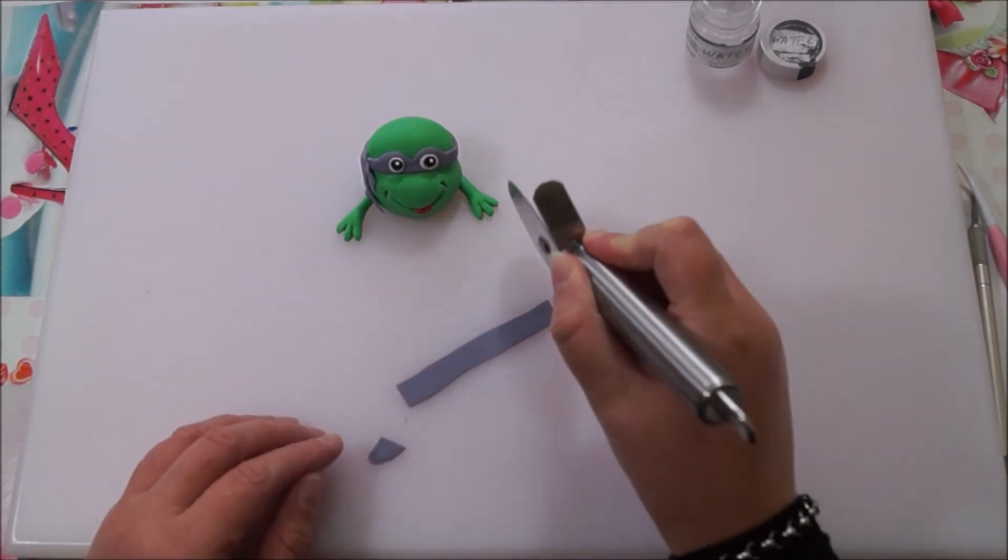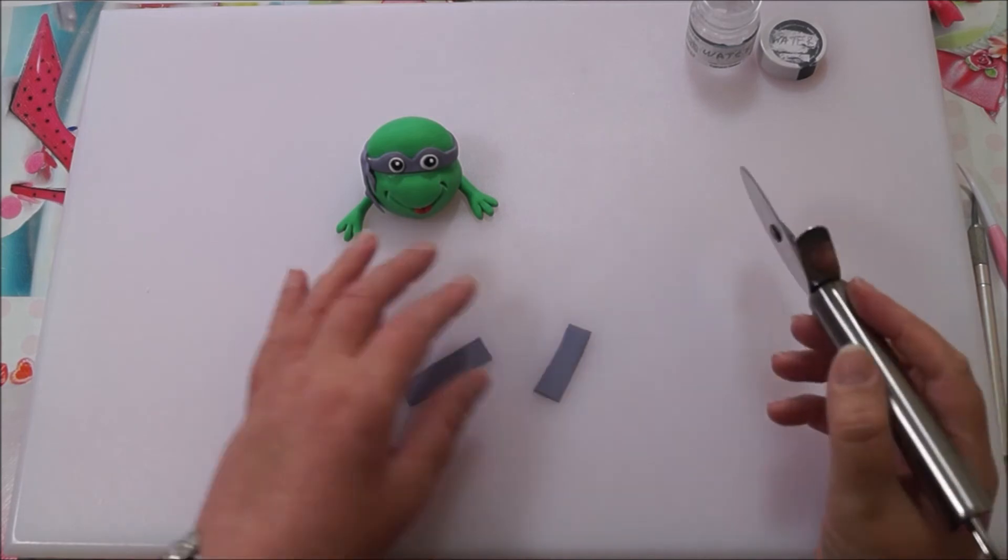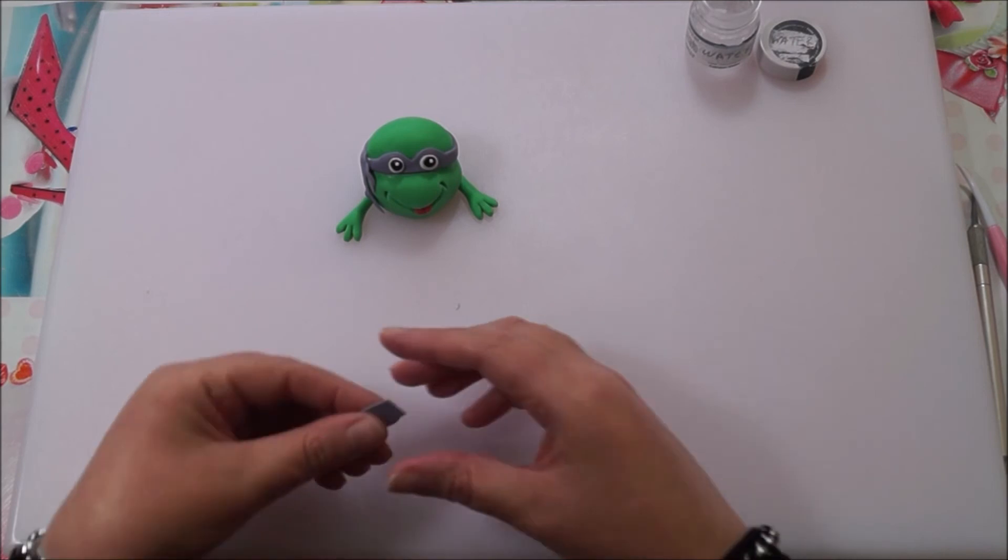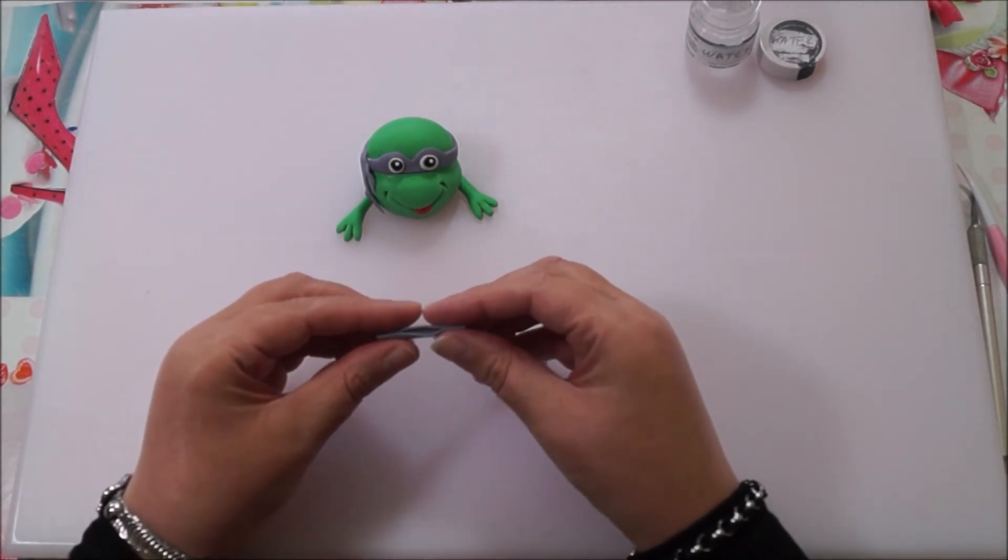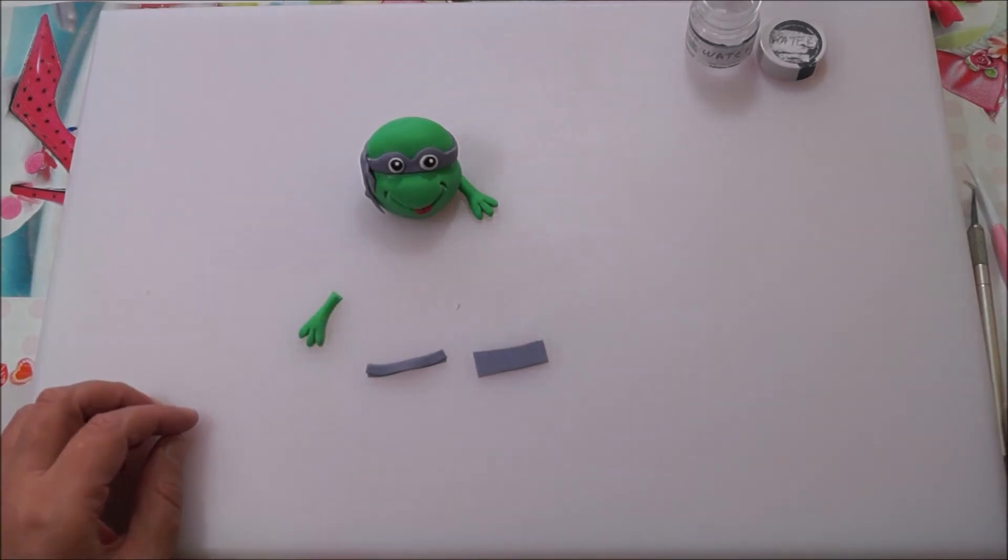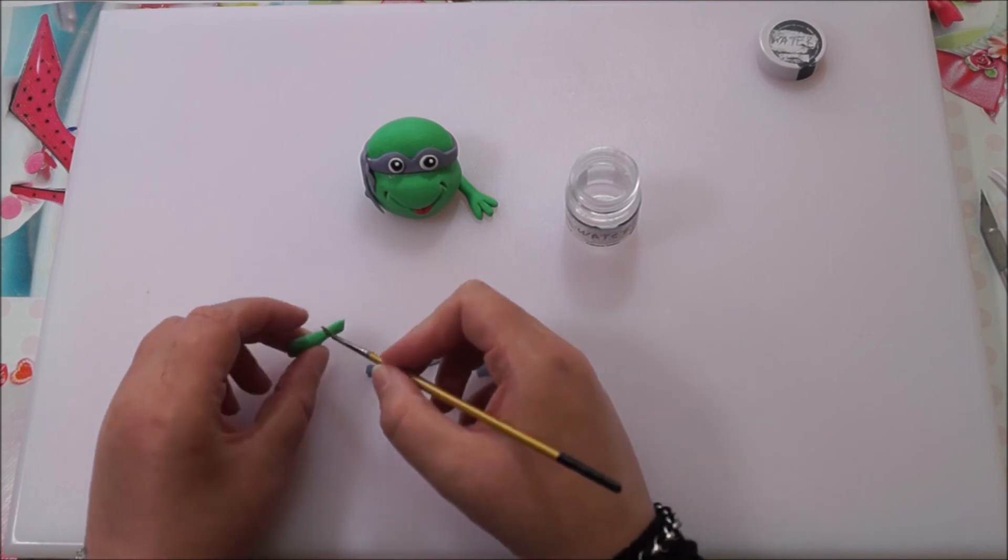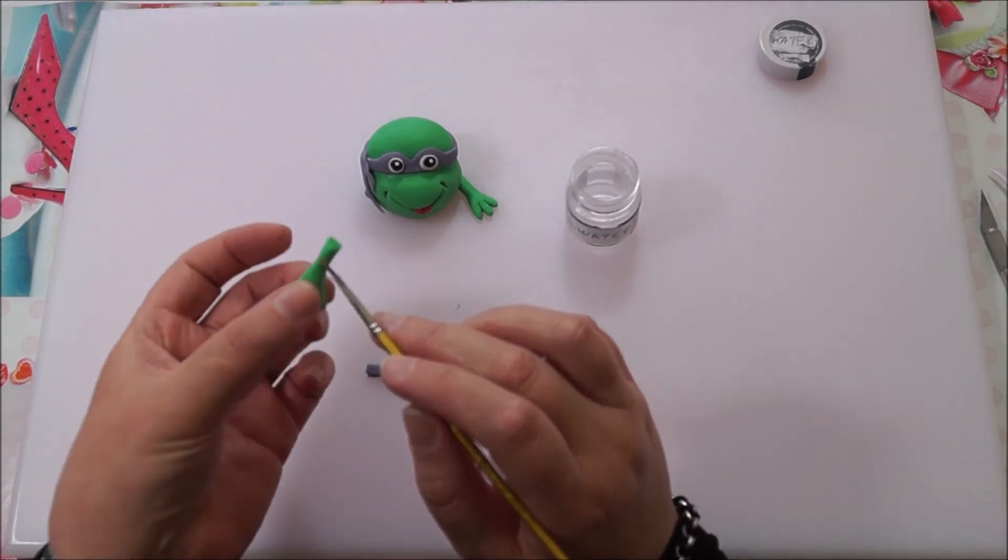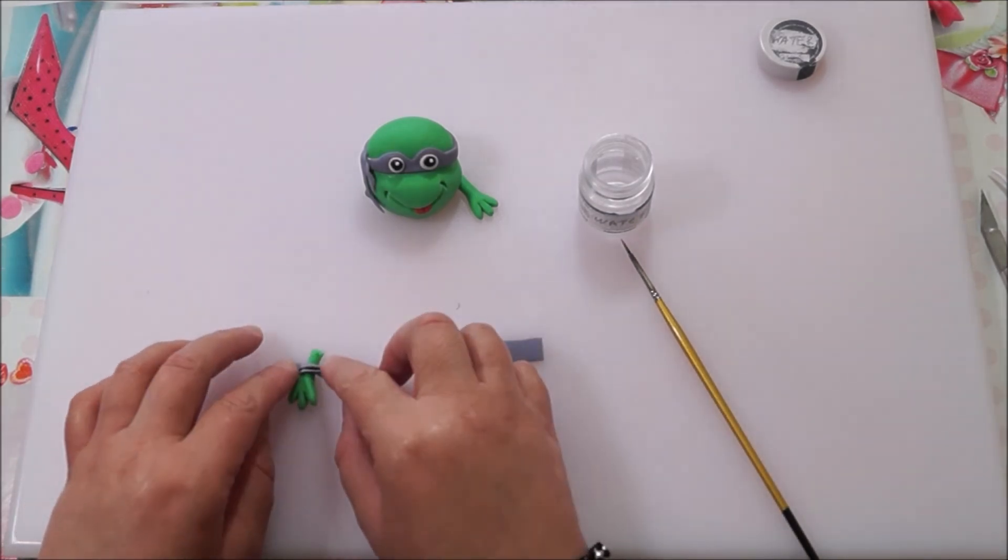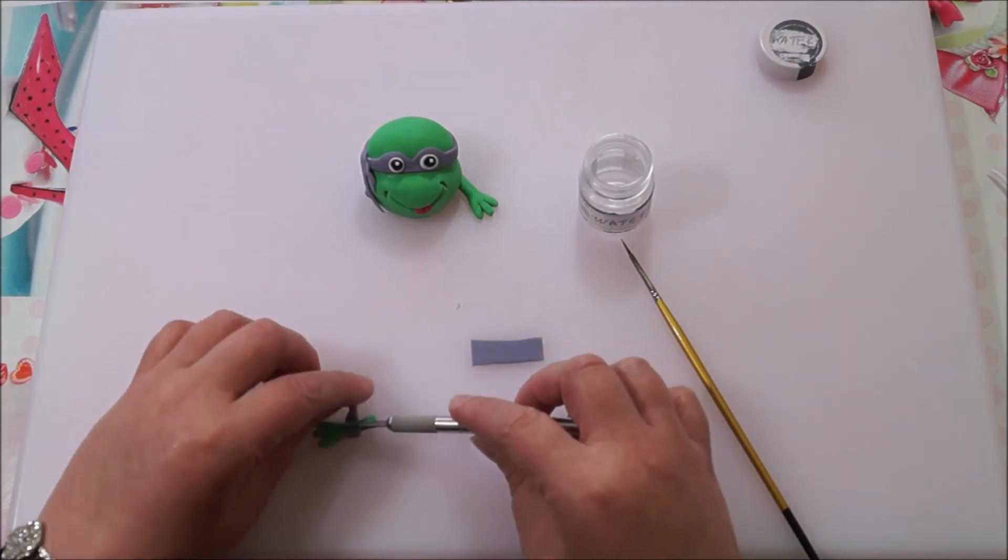Now I'm making the wristband. Trim a piece of purple fondant, cut it in half, and once you've got your pieces fold them in half. Using a little bit of water all the way around the wrist, stick on the wristband, then trim it with your knife and smoothen the edge for a neat finish.